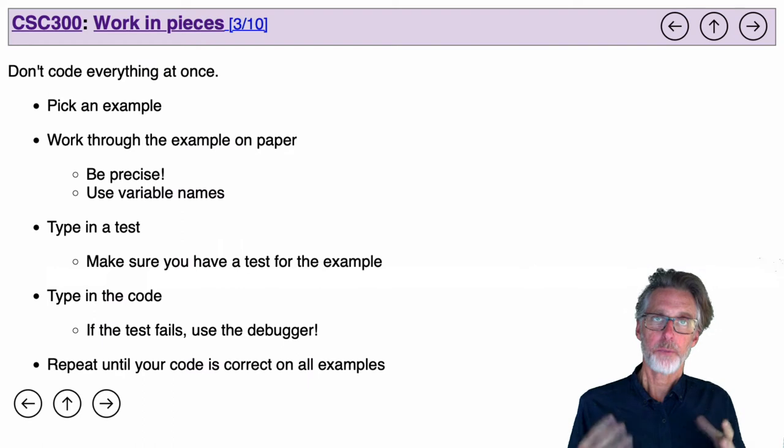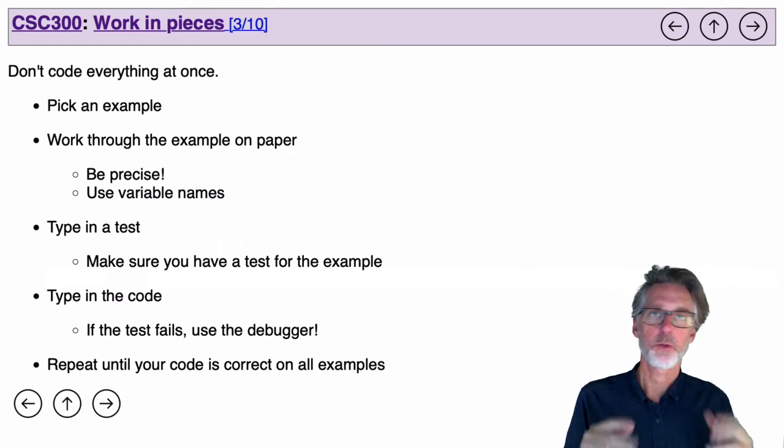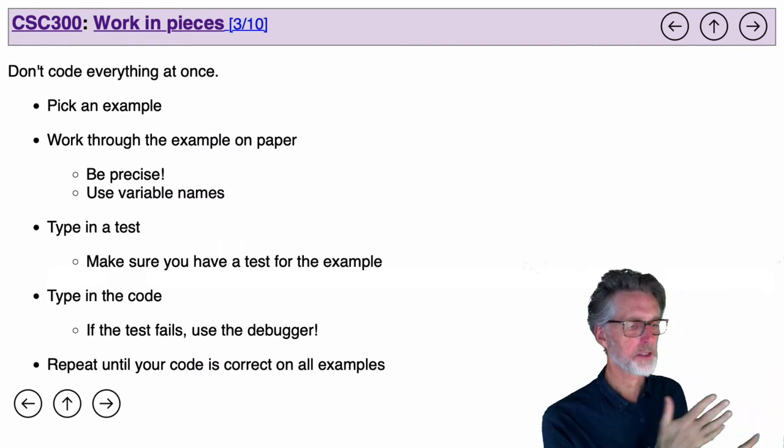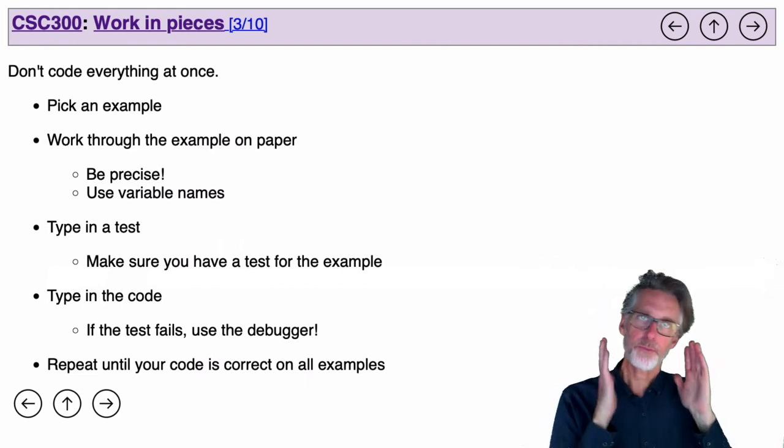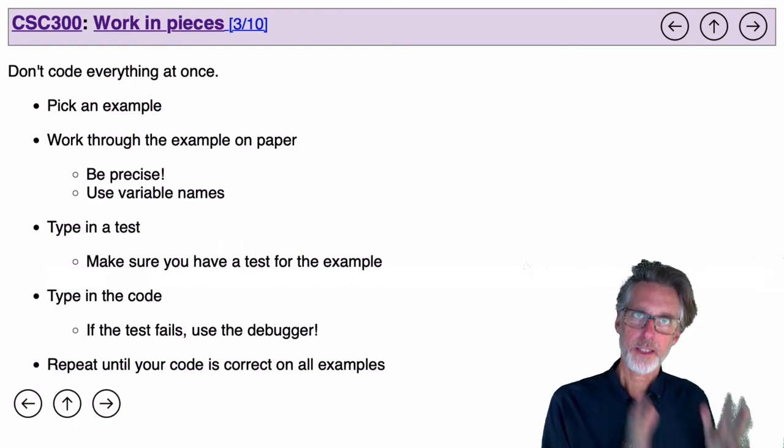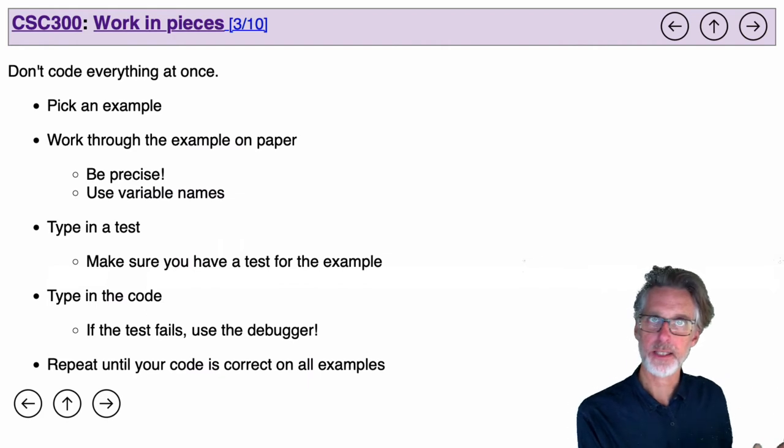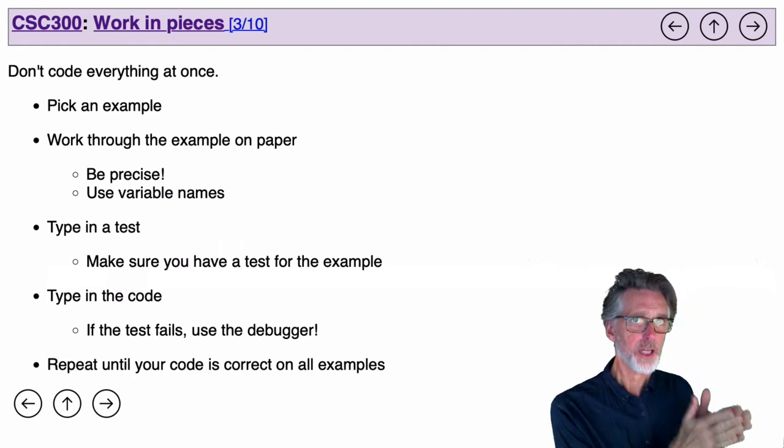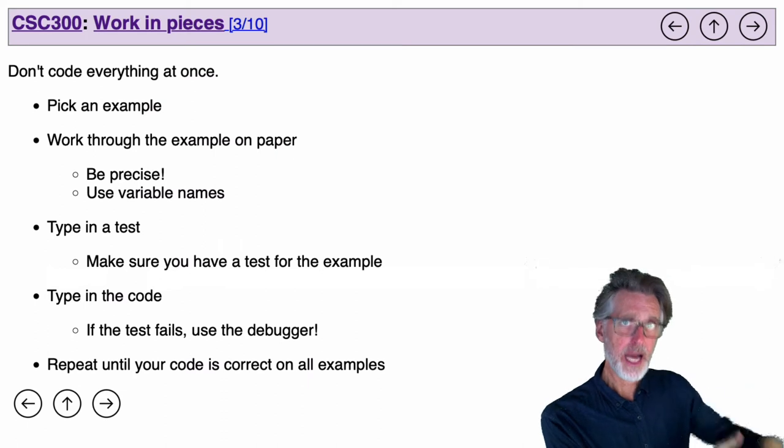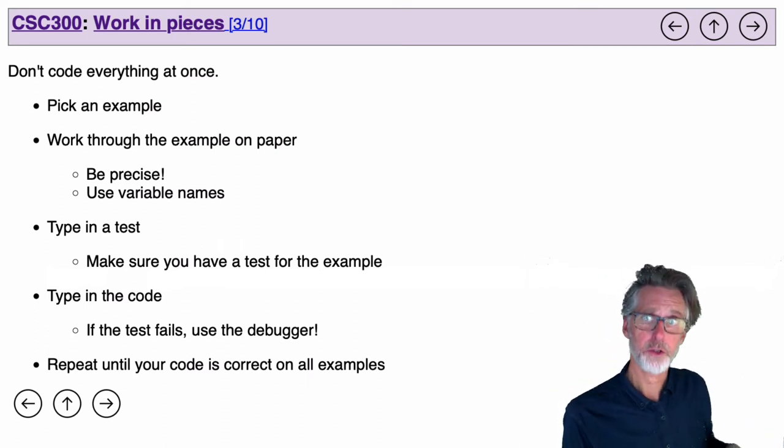I want you to work through it on paper, but not in a vague way. Don't be satisfied with sort of vague ideas of, oh, I'm moving through the list. No, we need precise names for variables, precise state of the machine. Think about what the variable name is that's going to move you through the list, whether it's I or X or whatever. Think about all the other variables that you need to store. Think about how the computer will modify those variables as execution proceeds.